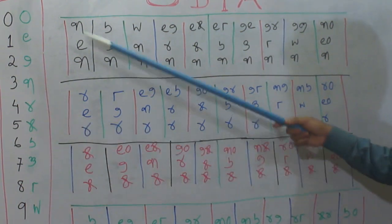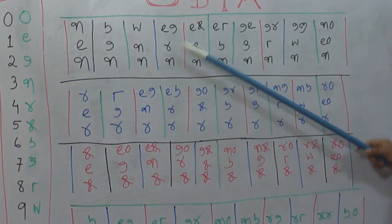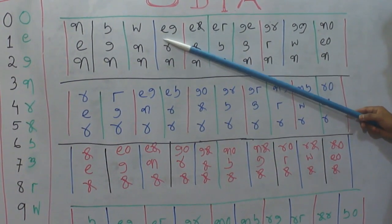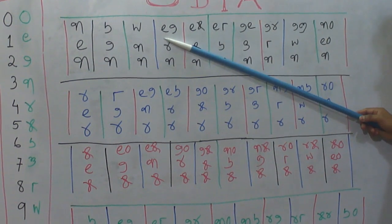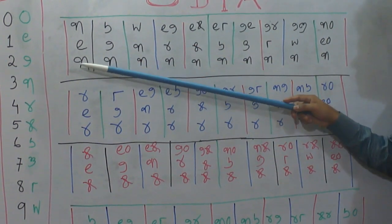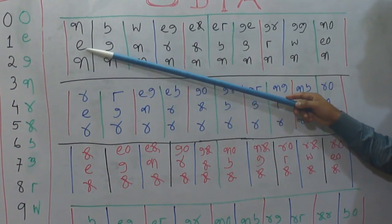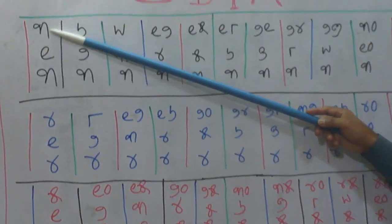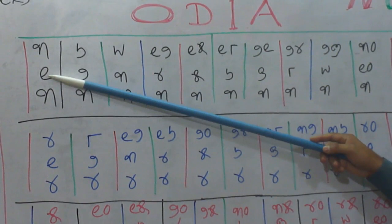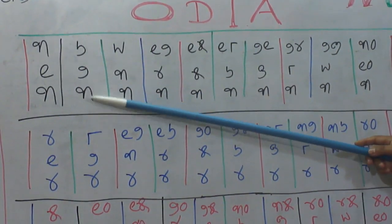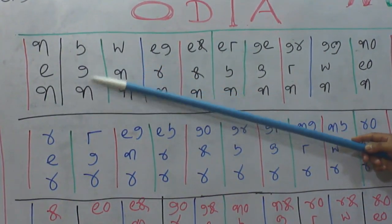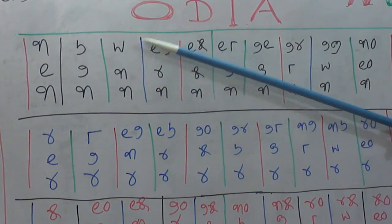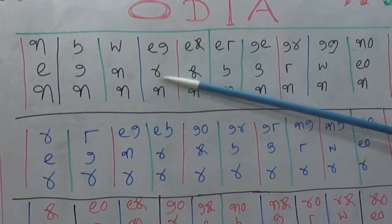So if you see here, this is a multiplication table starting with three. We call this: three one ja three, that means 'tini kaye tin'. Three times one is three. 'Tini kaye tin'. Three times two is six: 'tini dunaye chha'. Three times three is nine: 'tini tiriye noa'.